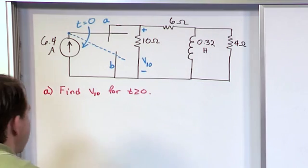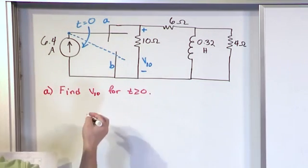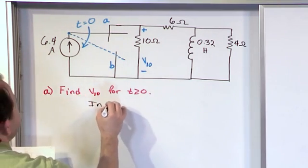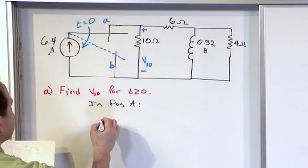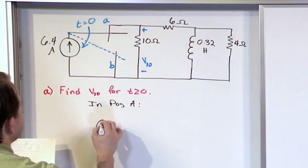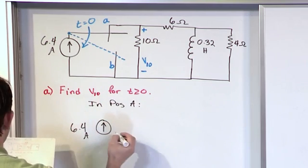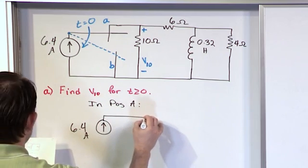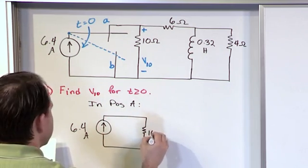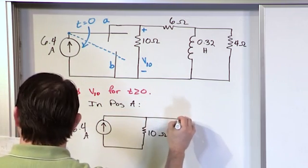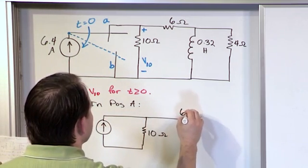So we're going to do that here. And so what we're going to say is in position A, this means before the switch opens, the circuit's going to look like this. We're going to have this current source and it's going to be 6.4 amps. And then what's going to happen is we have this 10 ohm resistor here. So this is 10 ohms. And then over here we have a 6 ohm resistor.